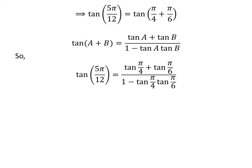Application of the above identity gives us tangent of 5 times pi upon 12 is equal to tangent of pi upon 4 plus tangent of pi upon 6, upon 1 minus tangent of pi upon 4 times tangent of pi upon 6.